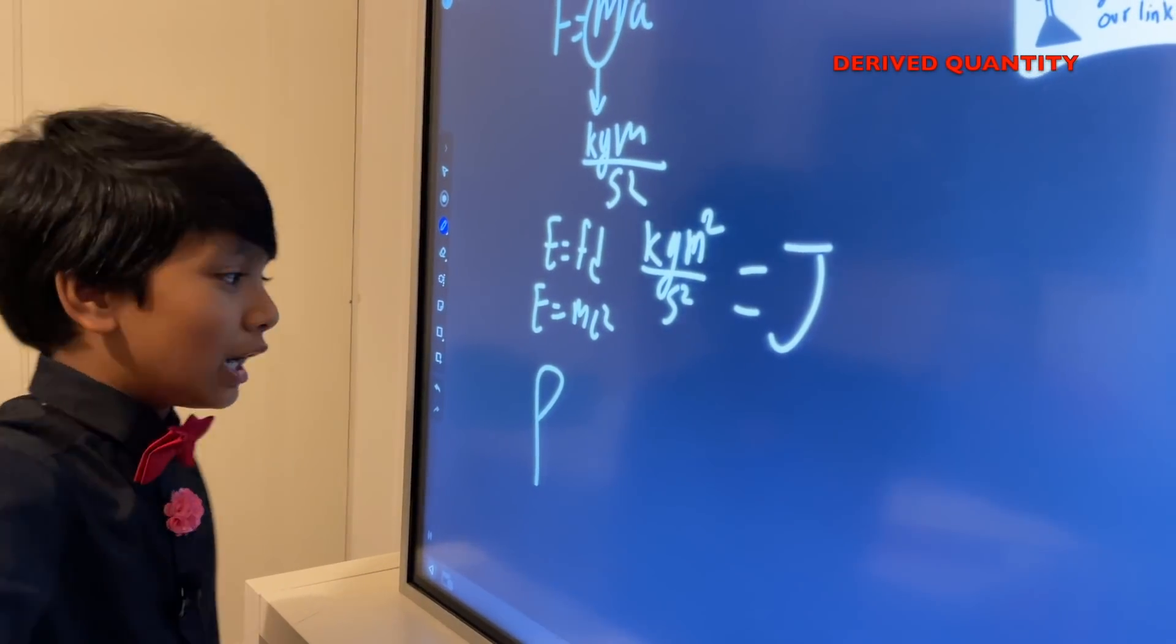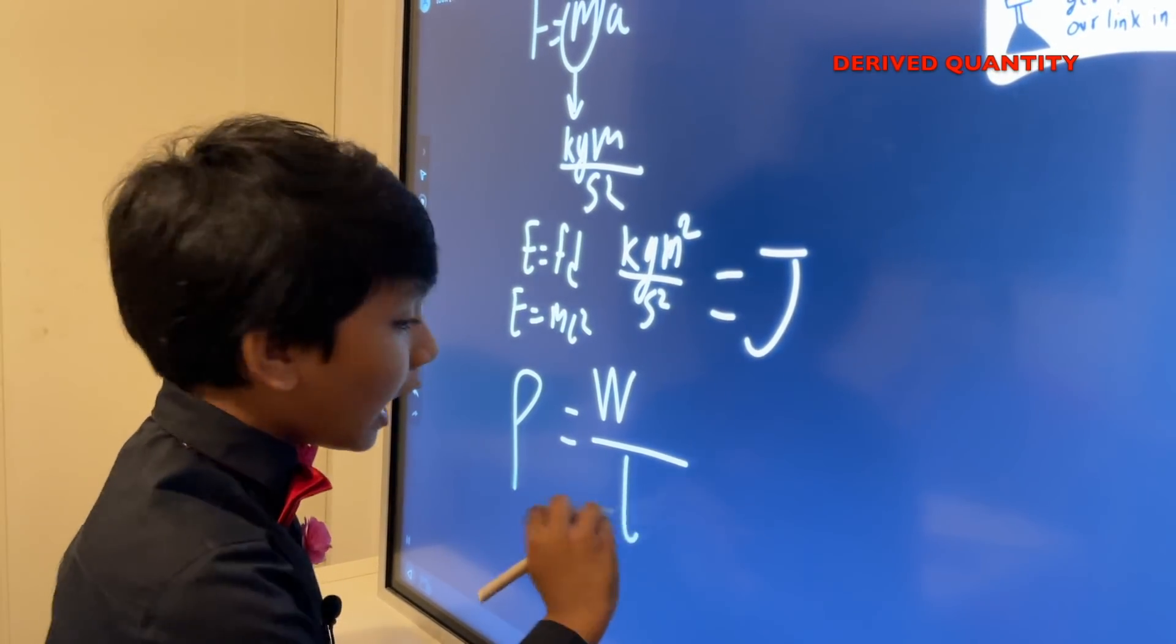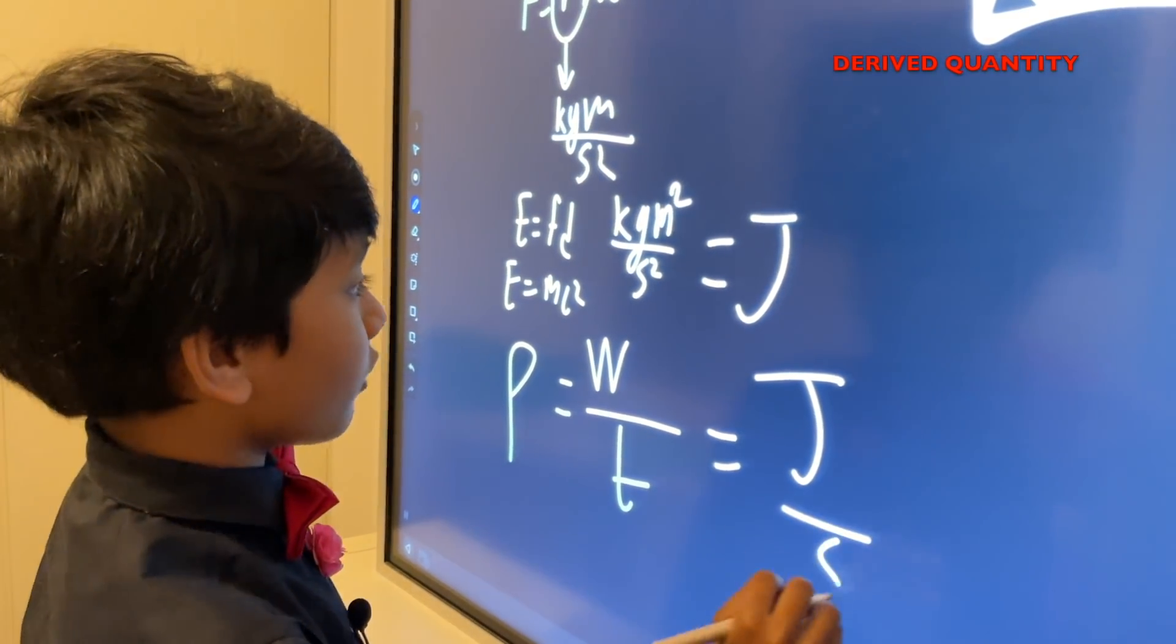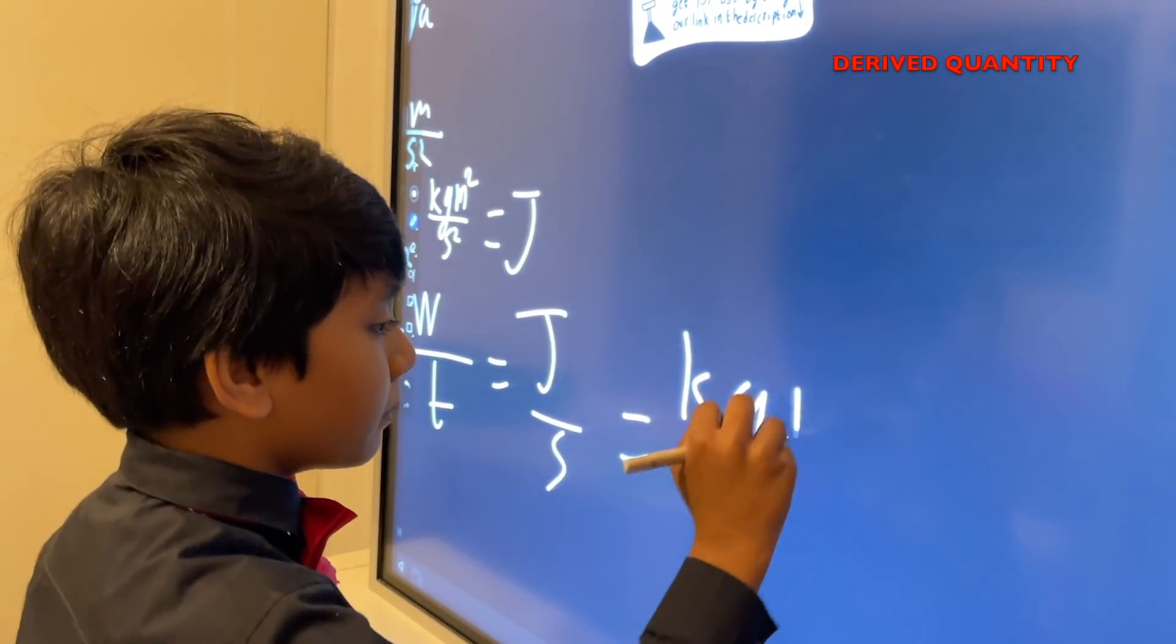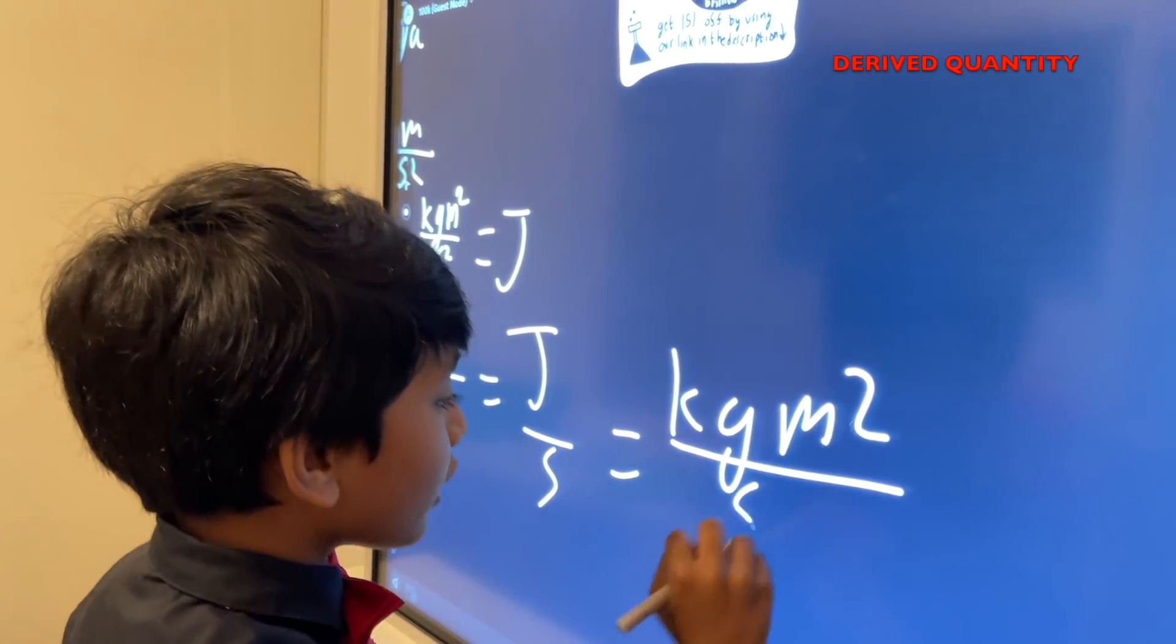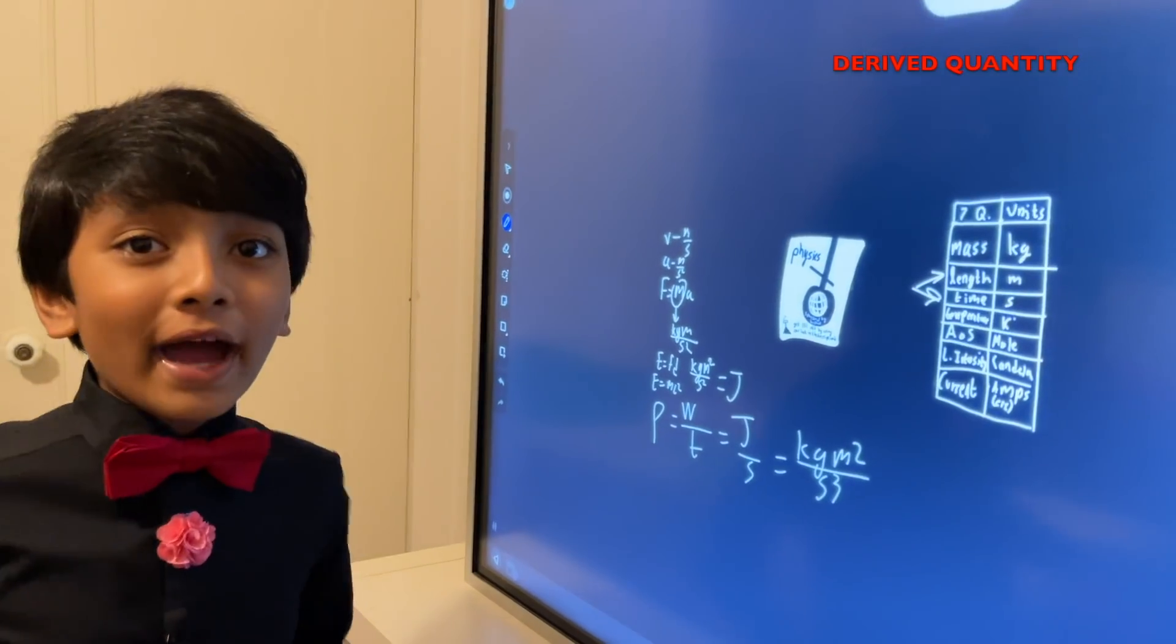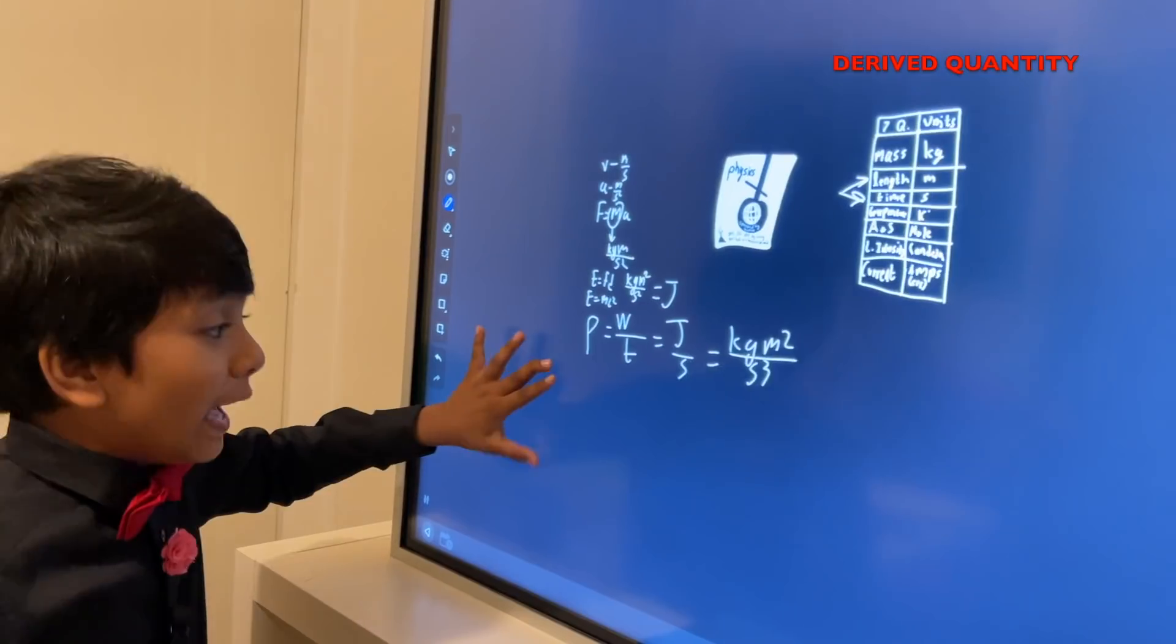And what is work also used in? Power. Power is work over time. That's joules over seconds. Which gives us kilogram meter squared over second cubed. Oh, my God. It is truly a miracle fossil.